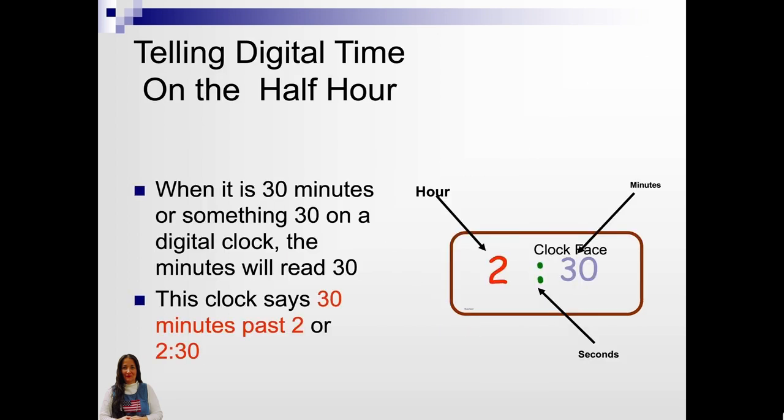Telling digital time on the half hour. When it is 30 minutes or something 30 on a digital clock, the minutes will read 30. This clock says 30 minutes past 2 or 2:30. The 2 is the hour. The colon sometimes blinks the seconds as it goes by. And then the minutes are the 30. So it's 30 minutes past 2 or 2:30.